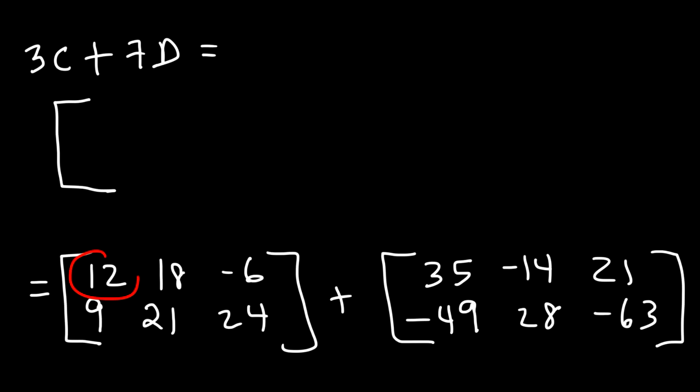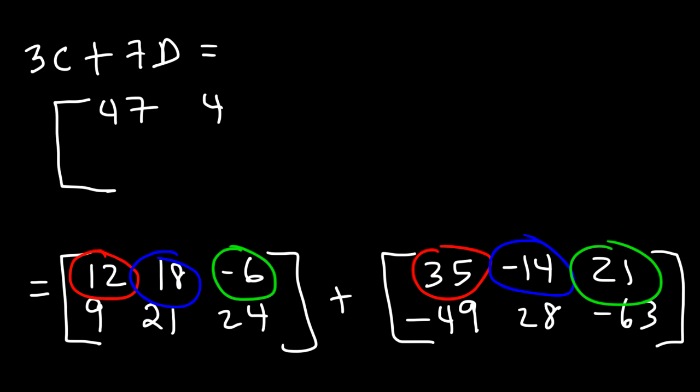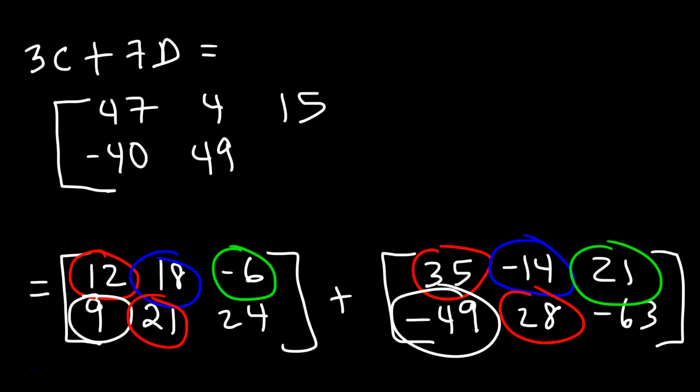So first, let's add 12 and 35. 12 plus 35 is 47. And then let's add 18 and negative 14, which will give us 4. And then negative 6 plus 21, so that adds up to 15. And then we have 9 and negative 49, which is negative 40. 21 plus 28, that's 49. And then 24 plus negative 63, or 24 minus 63, that's going to be negative 39.